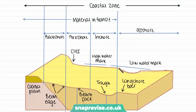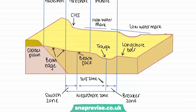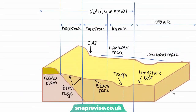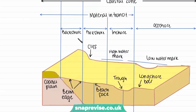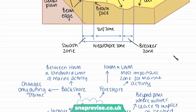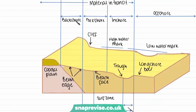These zones relate to the position of the high water mark and the low water mark. We also have a surf zone, a swash zone, and a breaker zone, which are classified as the nearshore zone. Starting with the back shore — the part highest up in the coastal zone — this is between the high water mark and the landward limit of marine activity, meaning the extent on land to which the sea has an effect. Here we only find changes during storms, as it's not really affected by day-to-day coastal processes.